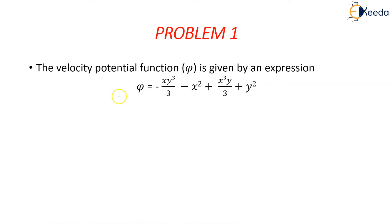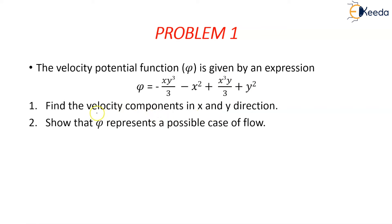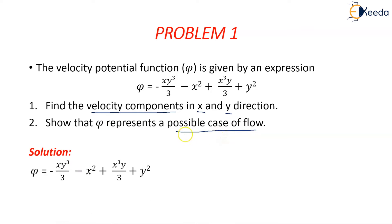Problem one: the stream function is given by the expression ψ = -xy³/3 - x² + x³y/3 + y². We are asked to calculate the velocity components in the x and y directions, and to show that ψ represents a possible case of flow.